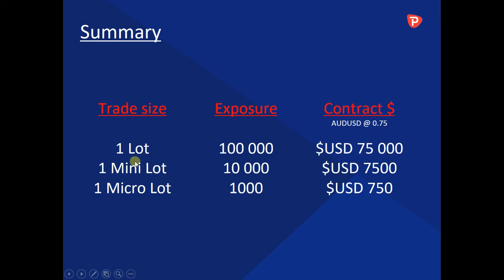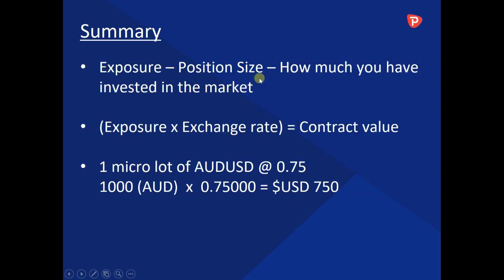You can actually go lower than that. 1 mini lot — 10,000 units of a base currency — gives you a contract value of 7,500 US dollars. Or the smallest one is a micro lot, which is 1,000 units exposure, giving you 750 US dollars as a contract value.